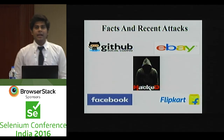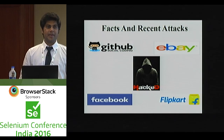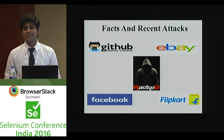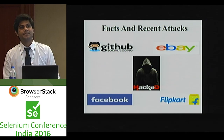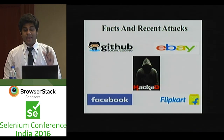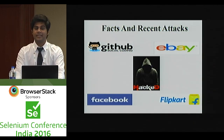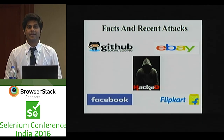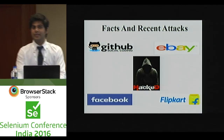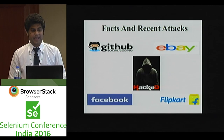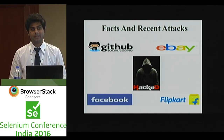Facebook organizes a bug bounty program every year where they recruit penetration testers or ethical hackers to find any vulnerabilities in their application. Last year, in such a bug bounty program, a penetration tester named Orange Tsi discovered a backdoor in Facebook's server. Most interestingly, that backdoor had already been placed by another attacker, with code that could exploit critical information of Facebook staff. This kind of attack can make a big impact on any website's business.